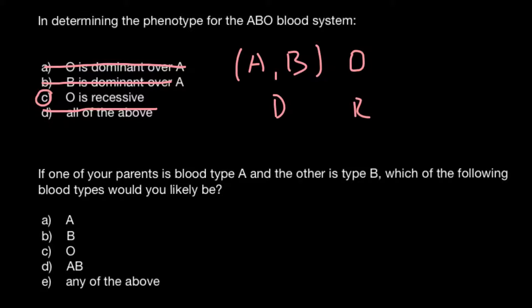Next question: if one of your parents is blood type A and the other is blood type B, which of the following blood types would you likely be? Once again, here we have five answers to choose from. If you're still confused which answer to choose, here is my explanation.